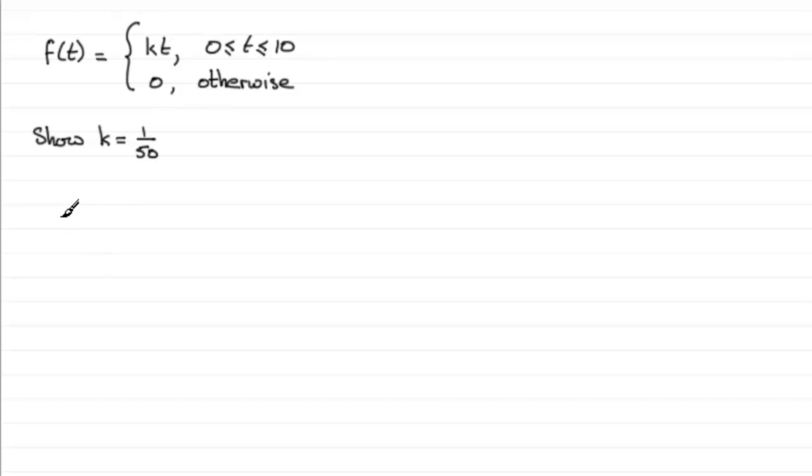So I could easily find out k just by sketching, for instance, the probability density function. And this probability density function, let's just draw the axes in here, t and f(t).